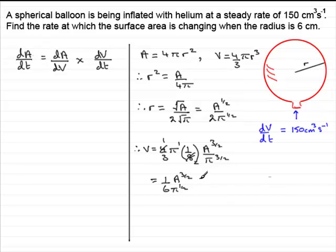So I've got V now in terms of A. And I should be able to find dV by dA. So let's do that. So you've got 3 over 2 times 1 sixth, which comes out at a quarter. You've got pi to the half, that stays there, because that's a constant. And you drop the power of A by 1. So that's A to the power 1 half.